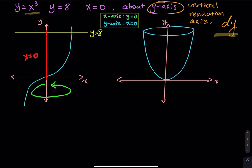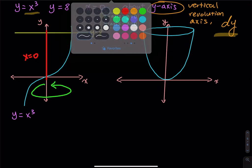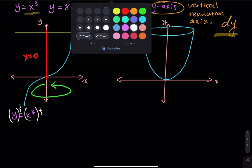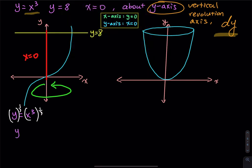To fix this, we rewrite y = x³ by putting x in terms of y. Take both sides to the 1/3 power: y^(1/3) = x. So x = y^(1/3), which is the cube root of y.